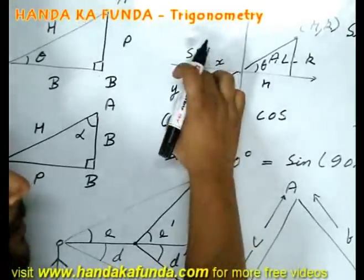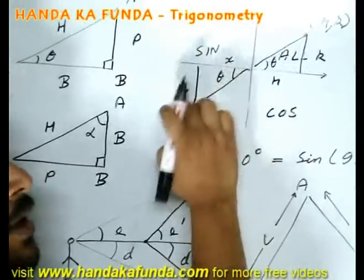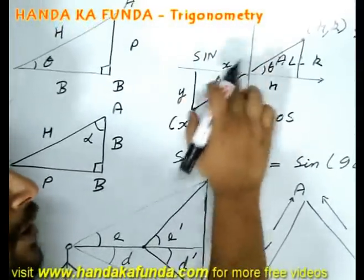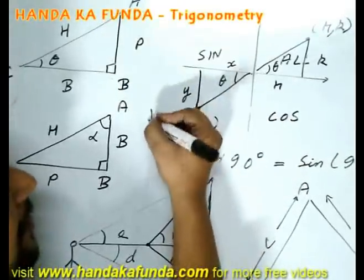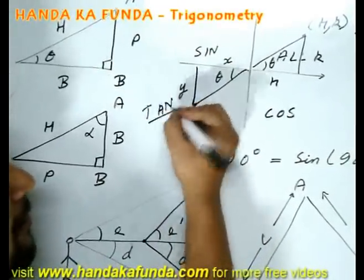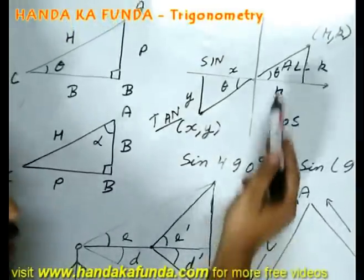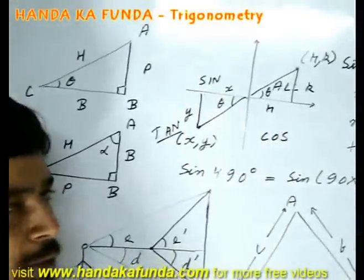But tan theta is the perpendicular upon base or y upon x. y is negative, x is negative. Both of them are negative. And that is the reason why in the third quadrant tan is positive. It is recommended you do the same analysis for all four quadrants.